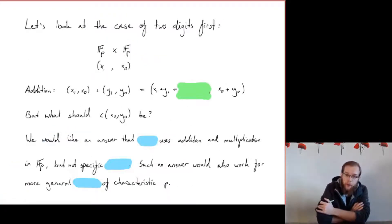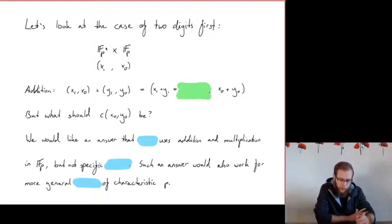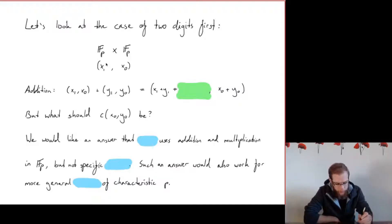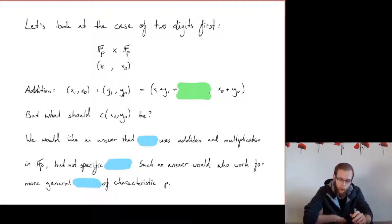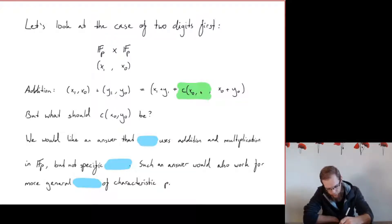As the motivating example we'll just look at the case of two digits. We have two digits with values in Fp, x₀ and x₁, and we want to add the digits in the 0th place and in the 1st place but we want to keep a carry from the 0th coefficient. So the addition should look something like: if you add (x₁, x₀) to (y₁, y₀), then in the 0th position you just add the two digits, and in the 1st position you add the two digits but also get some carry that depends on x₀ and y₀.